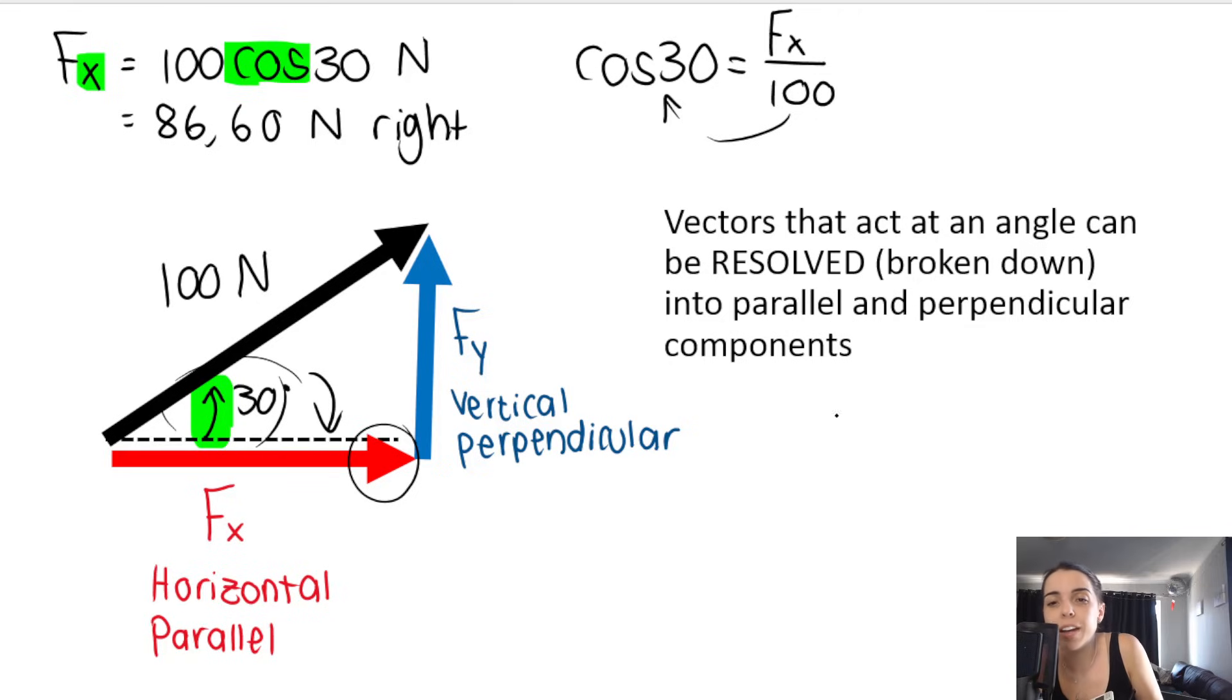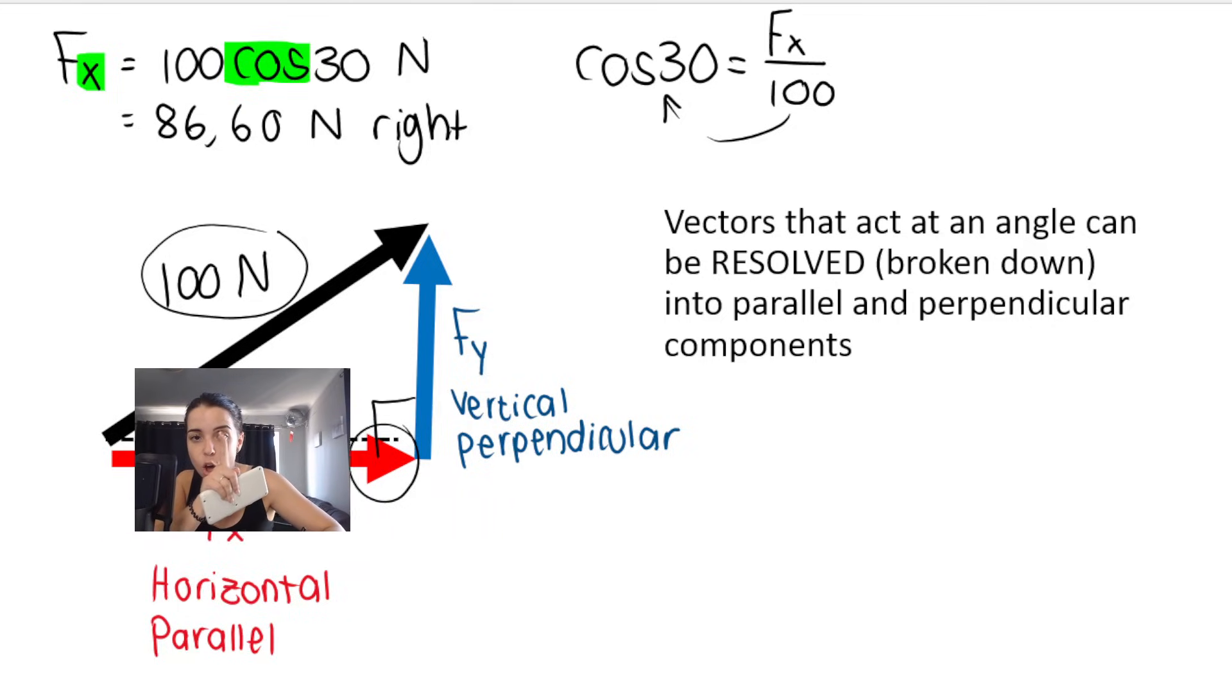Then they could say, how do you work out fy? Now, again, look at the angle. It's a right angle triangle, which is why I can use my trig ratios. Here's the 90, by the way, which is why this is the hypotenuse. To find fy, I am going to be using the opposite. Look at the 30.